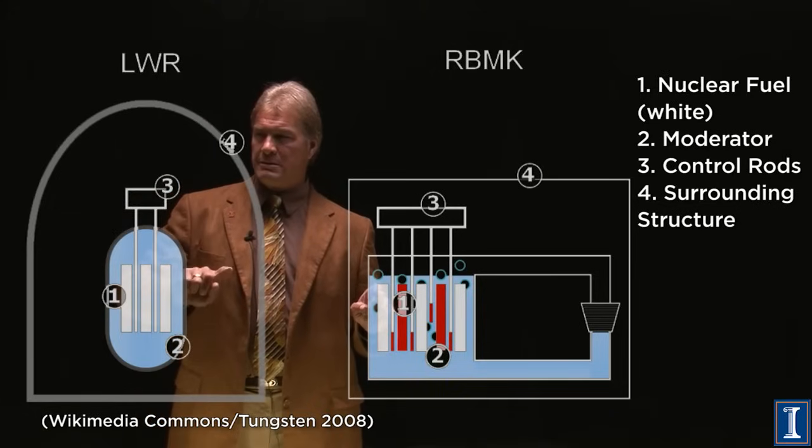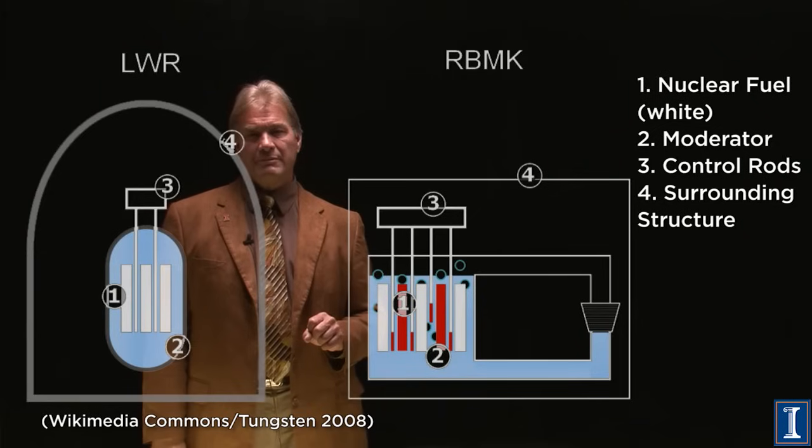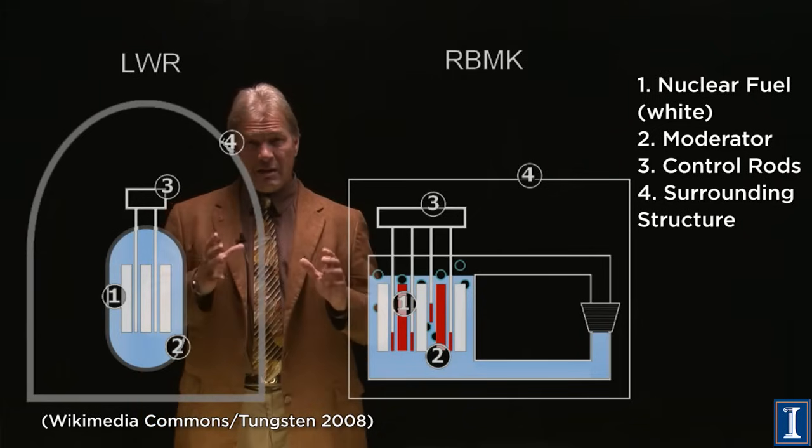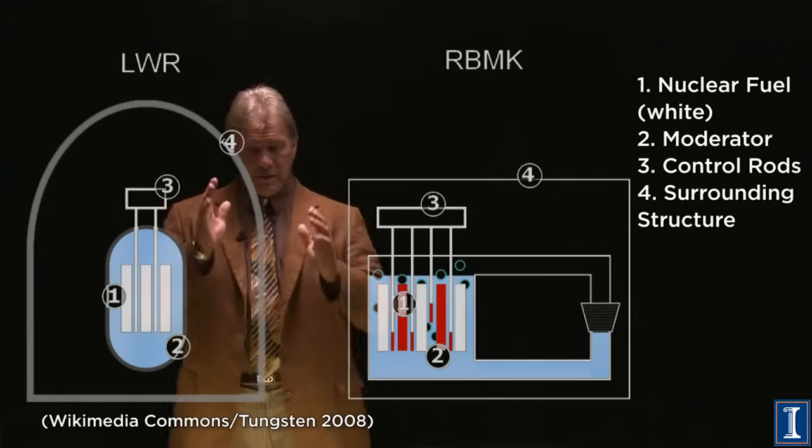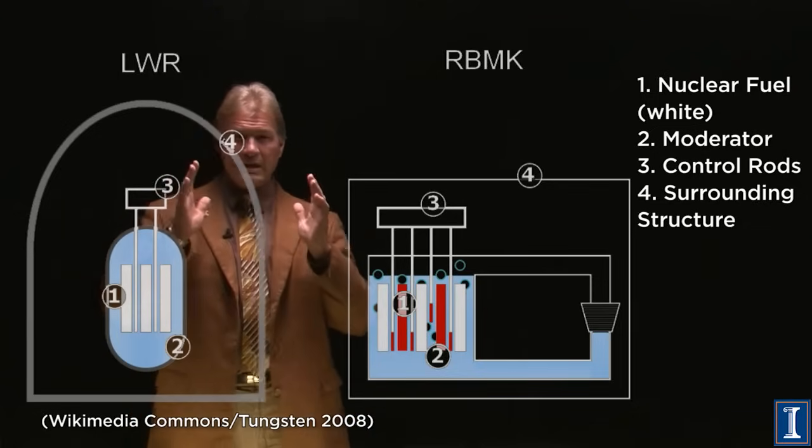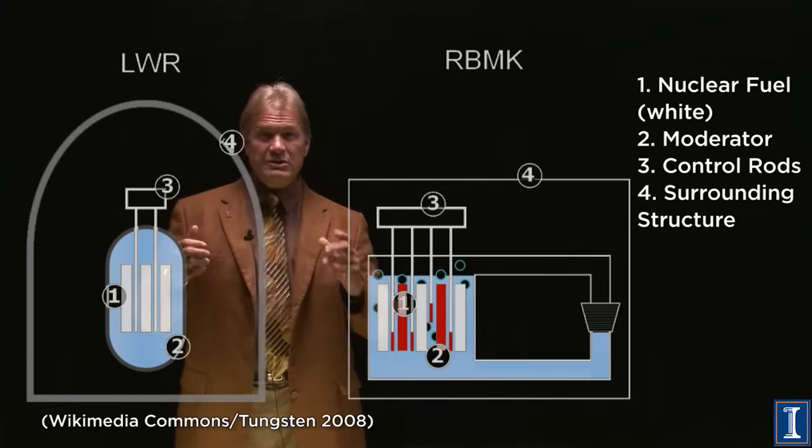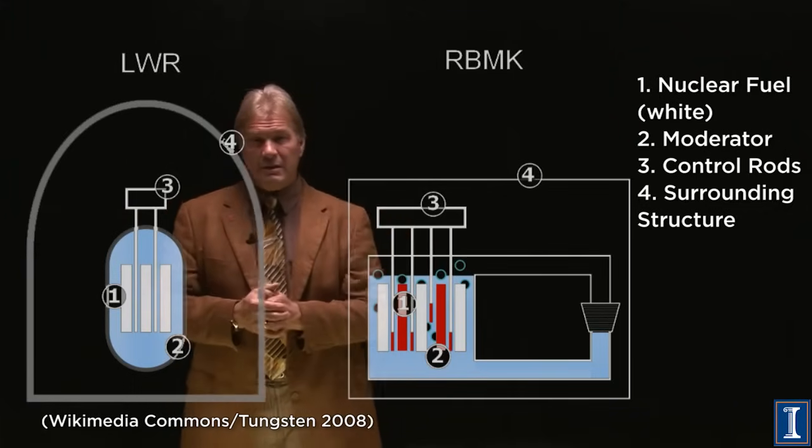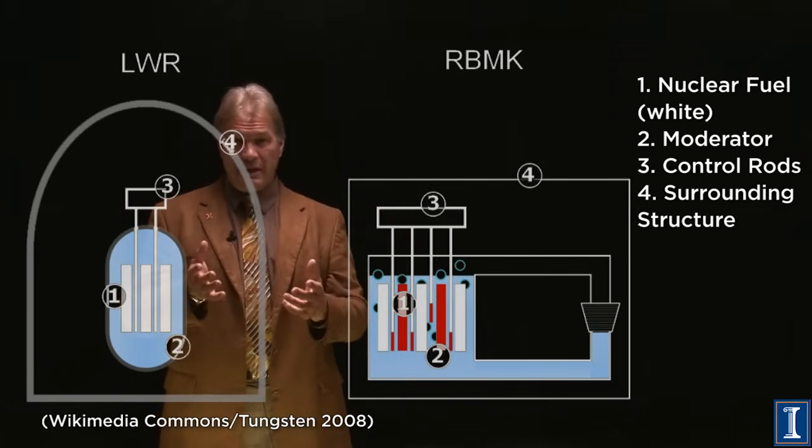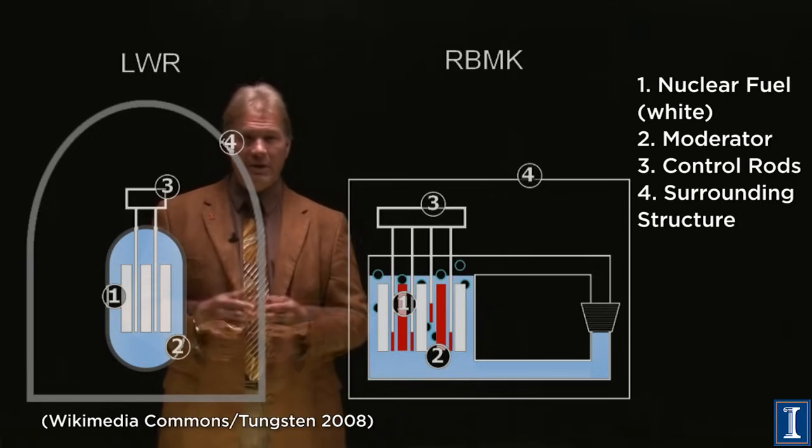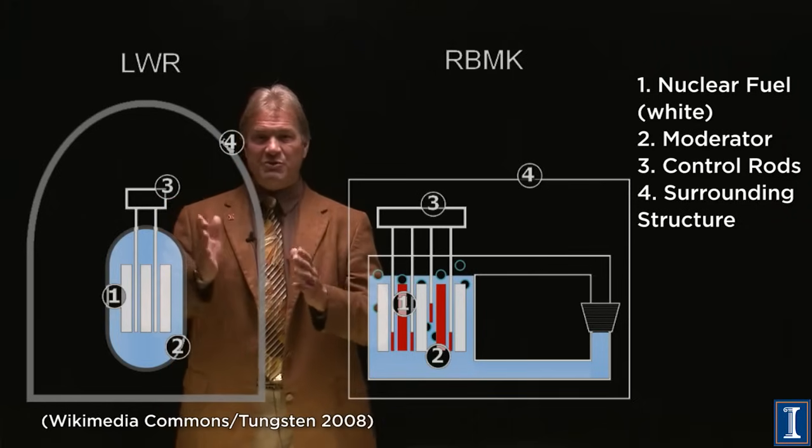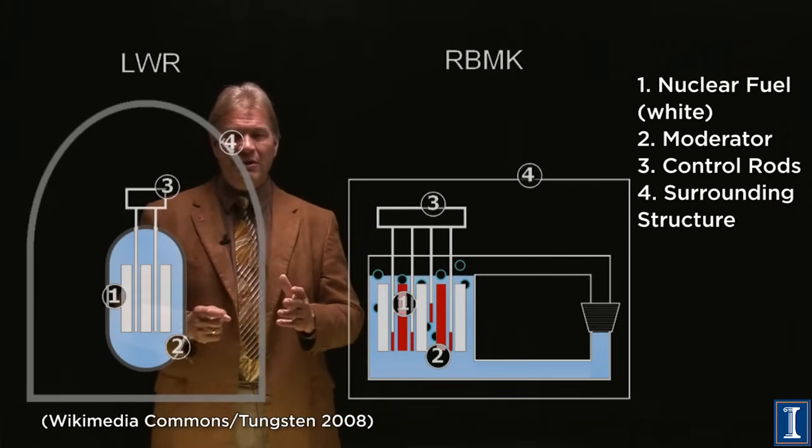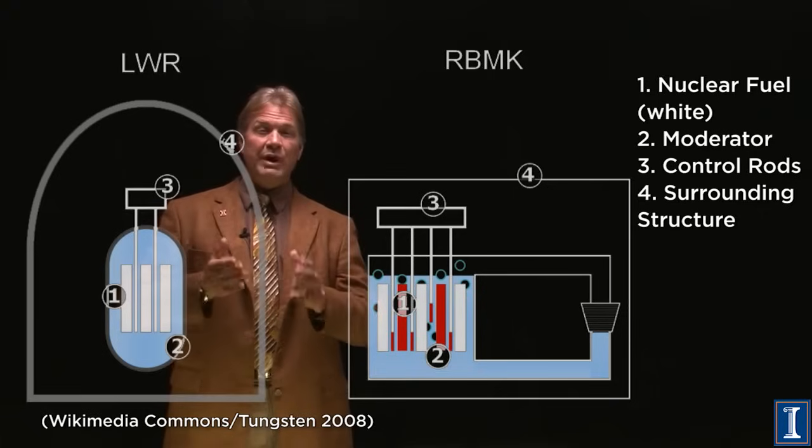This is a containment building. And a containment building is expensive. This is the three foot thick concrete. This is the stuff that a jet airplane can hit into, and the jet airplane disappears in a cloud of vapor. The building structure, the three foot thick reinforced concrete with the steel liner, stays sitting right there.